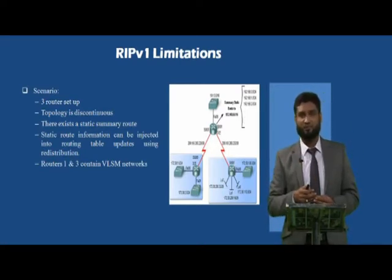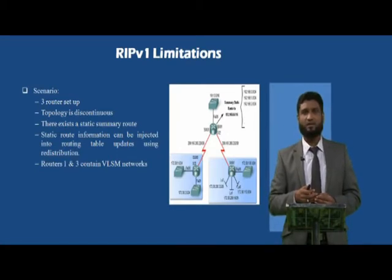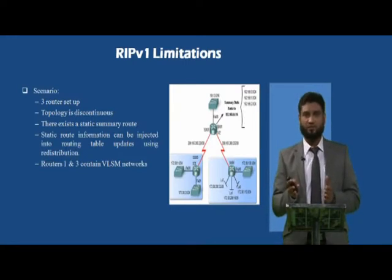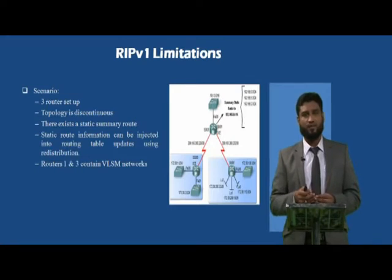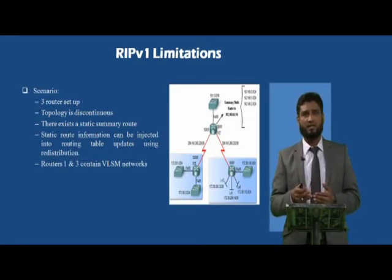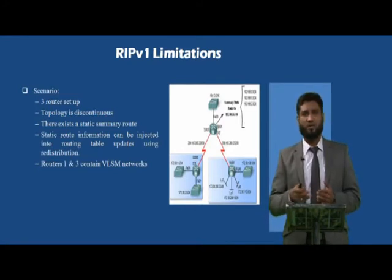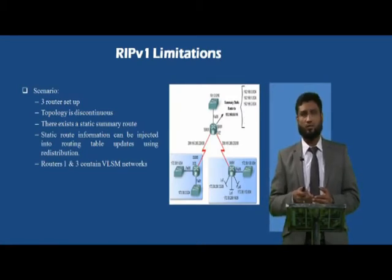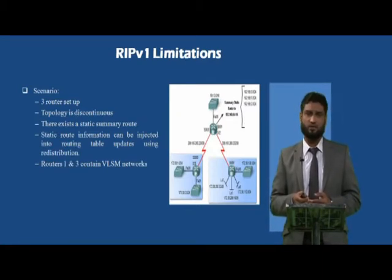RIP version 1 cannot solve the discontiguous network problem. Instead, you should install RIP version 2. Using packet tracer to configure and simulate both RIP version 1 and RIP version 2 — and tracing packets in the analyzer — clearly shows the drawbacks of RIP version 1 and the advantages of RIP version 2.